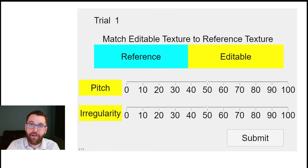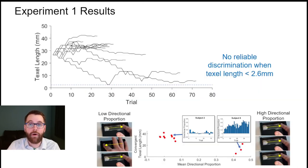Experiment 1 demonstrated that, while performance varied among subjects, none were capable of reliably discerning one texture from another drawn from the same underlying parameters when the texel length dropped below 2.6 millimeters. It was observed that performance was correlated positively to the so-called directional proportion, which measured how often the subject was swiping in a single direction only.